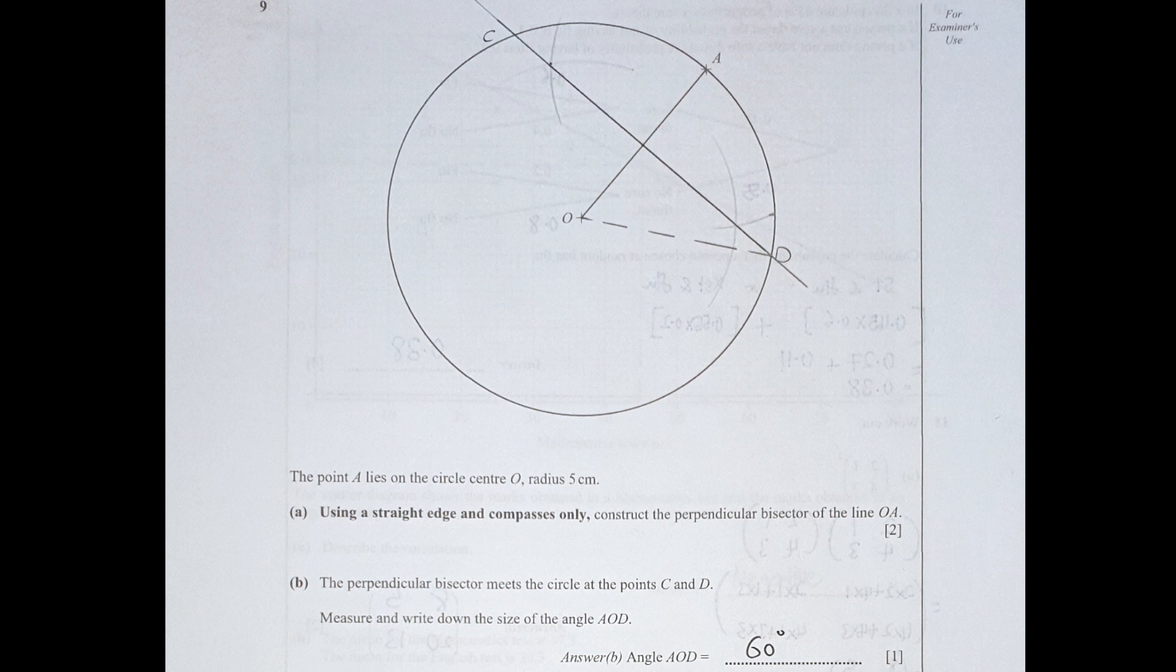For question 9 here, use a straight edge and a compass only. Construct a perpendicular bisector of the line OA. Okay, so from line OA you extended your compass to more than half of it, draw each at left and right side. Use the same compass and the same distance, draw another two arc shapes from point A. Okay, the line there will be the intersection.